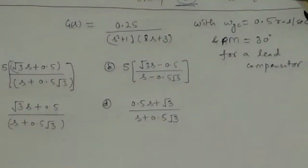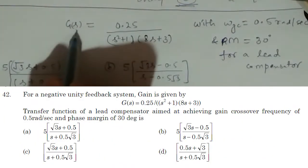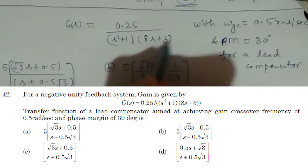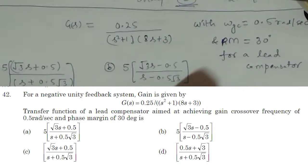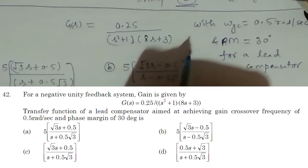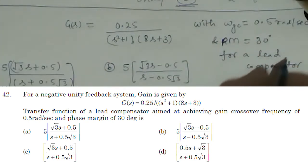Hello friends, welcome to Gate Gyan. In the given question, we have a transfer function G(s) = 0.25 / [(s²+1)(8s+3)], and it is getting connected to a lead compensator.